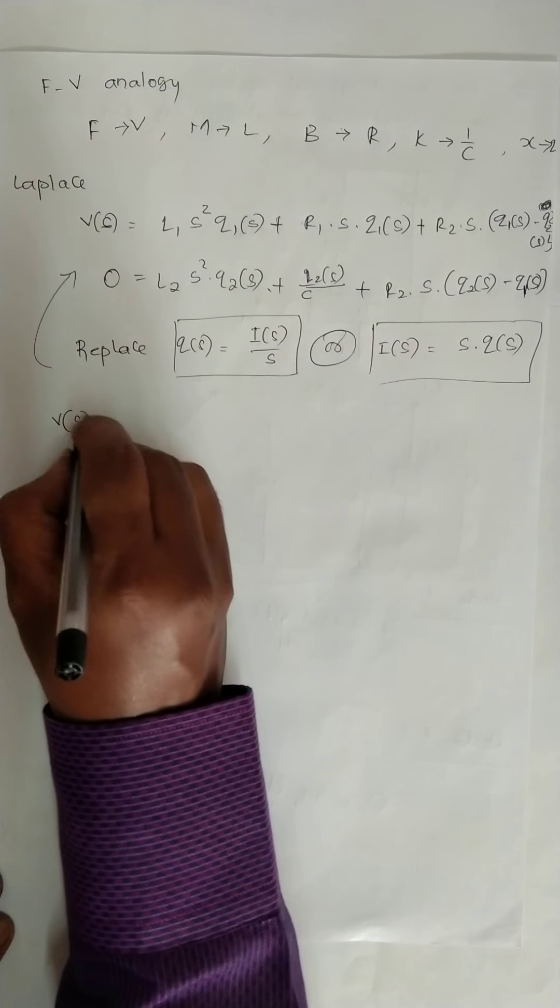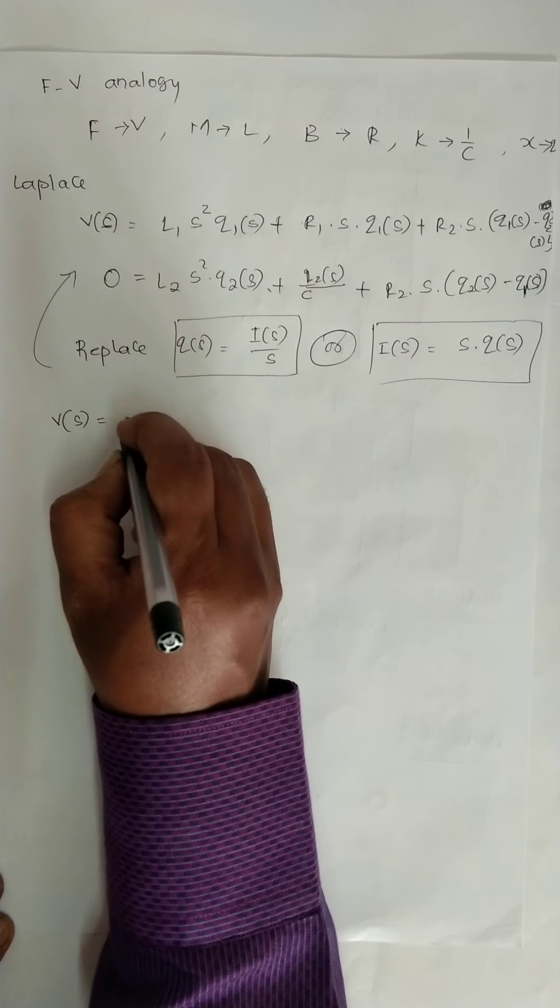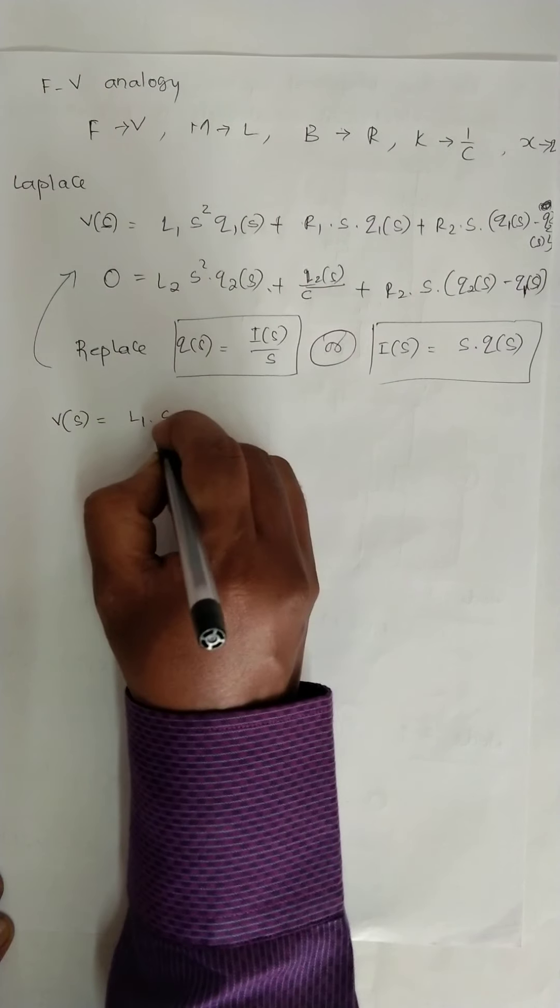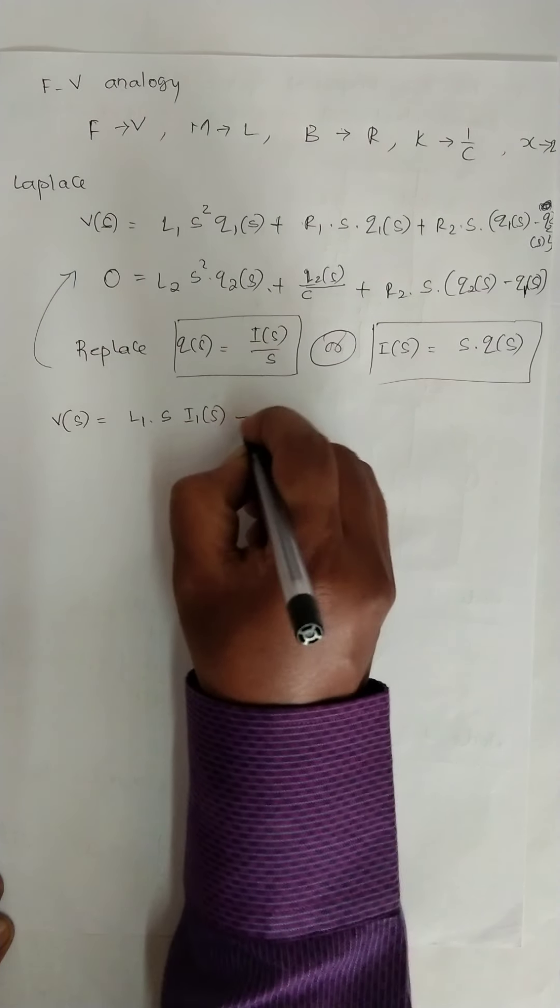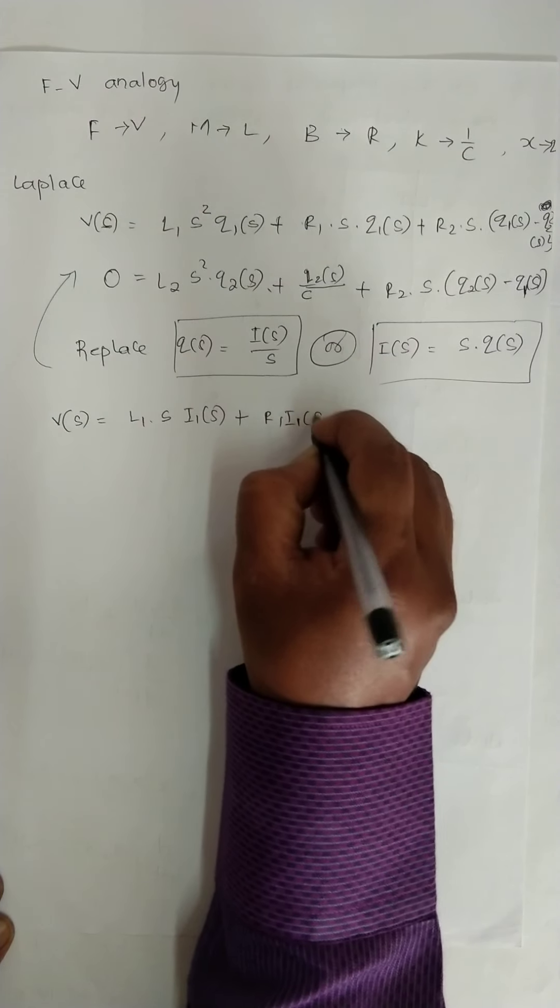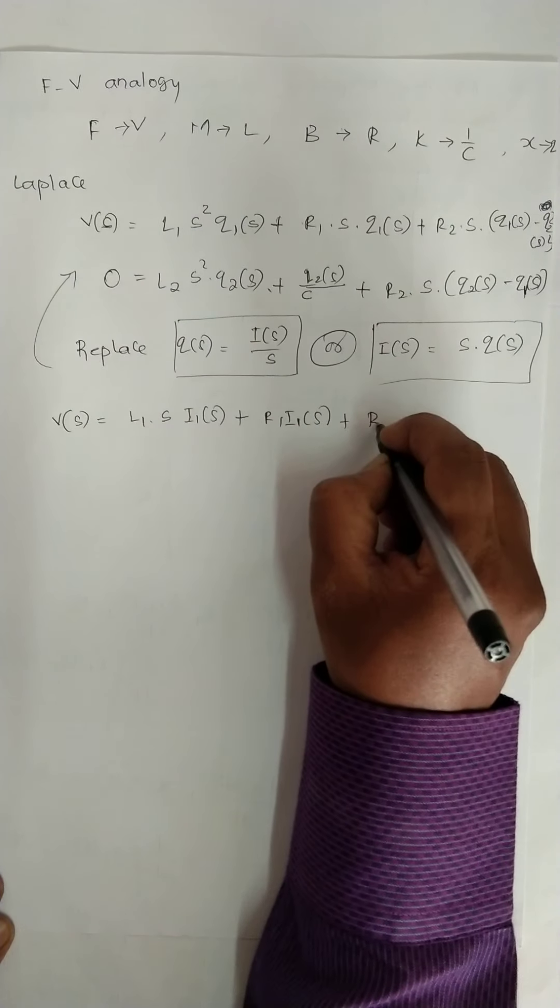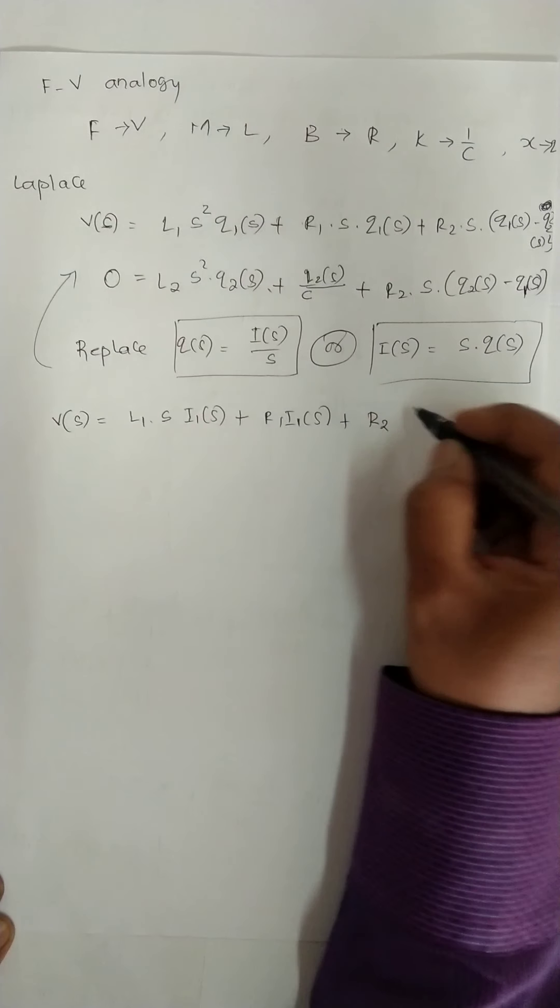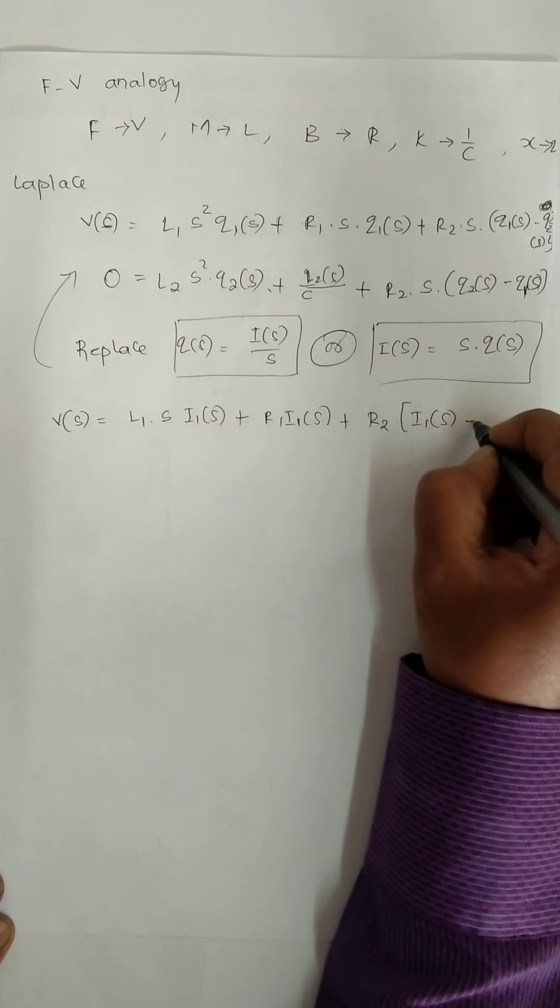By replacing, V(s) will be same, then here it becomes L1 s I1(s) plus R1 I1(s) plus R2 (I1(s) - I2(s)).